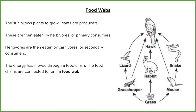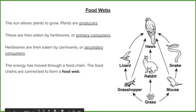Food webs are interesting for analysing how an area would respond if an animal were removed. For example, if we got rid of the hawk, the lizards, rabbits, and snakes would probably grow in population because they no longer have a predator. We'd then probably see fewer grasshoppers, grass, and mice because their predators — lizards, rabbits, and snakes — are more abundant and eating more of them.